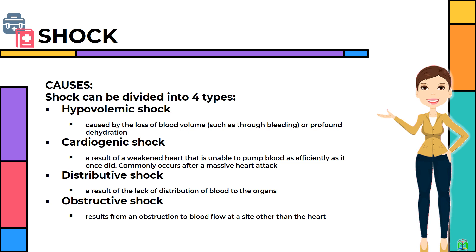The following are the causes of shock. Shock can be divided into four types: Hypovolemic shock, caused by the loss of blood volume such as through bleeding or profound dehydration; Cardiogenic shock, a result of a weakened heart unable to pump blood efficiently, commonly occurring after a massive heart attack; Distributive shock, a result of lack of distribution of blood to the organs; and Obstructive shock, resulting from an obstruction to blood flow at a site other than the heart.